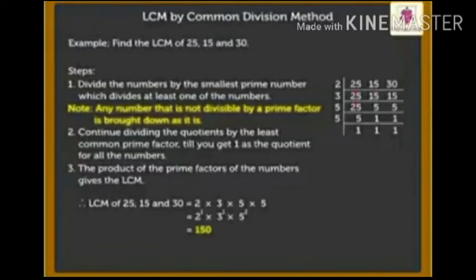Step 2: Continue dividing the quotient by the least common prime factor till you get 1 as the quotient for all the numbers. Now, we take next prime number 3.